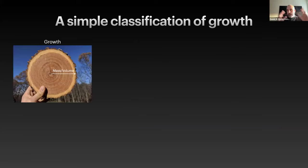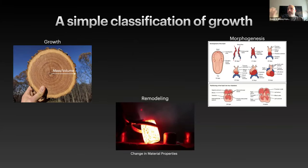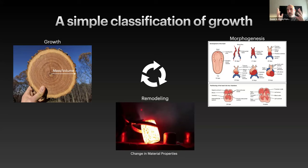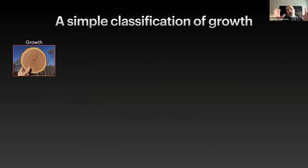There are many ways to classify growth, and here I'm going to give you the more standardized way. The simple classification is to think about three pillars of growth. One is growth, which is the change of mass or volume. The other one is called remodeling — this means there is a change of the material properties and the structure of a thing you are looking at. And then the other one is morphogenesis. These three things are interconnected with each other; we cannot have morphogenesis without growth and without remodeling.